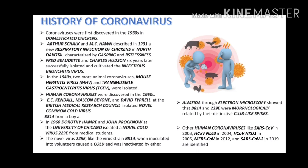Human coronaviruses were discovered in the 1960s. E.C. Kendall, McClone-Beyond and David Tyrell at the British Medical Research Council isolated novel common cold virus B814 from a boy. In 1960, Dorothy Hamray and John Prokho at the University of Chicago isolated a novel cold virus 229E from medical students. The novel virus 229E, like the virus strain B814, when inoculated into volunteers caused a cold and was inactivated by ether. Almeda through electron microscopy showed that B814 and 229E were morphologically related through their distinctive club-like spikes.